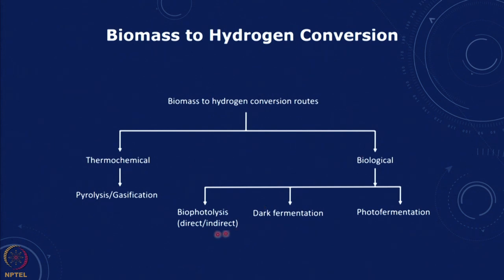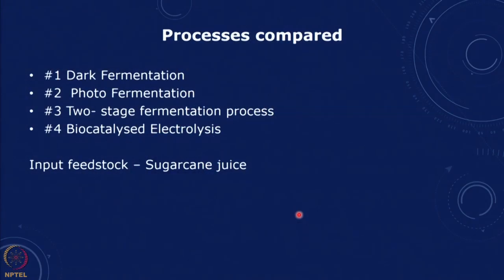We are looking at biological processes: bio photolysis, dark fermentation, photofermentation. I am just going to illustrate the methodology and some of the results. We will look at four different processes: dark fermentation, photo fermentation, two-stage fermentation, and bio-catalyzed electrolysis, and we will take an input feedstock of sugarcane juice.